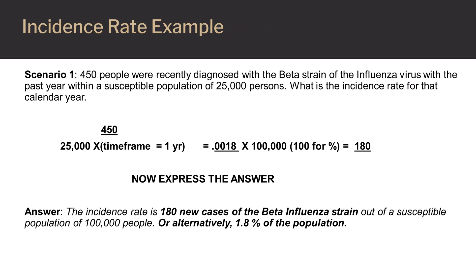This slide details an example of how to calculate an incidence rate in which 450 people were recently diagnosed with the beta strain of the influenza virus within the past year, within a susceptible population of 25,000 persons. Note the final answer can be either expressed as a percent or the quantified amount of people per population size.